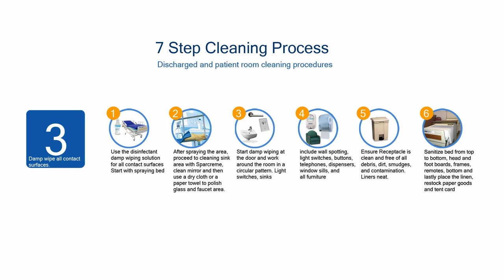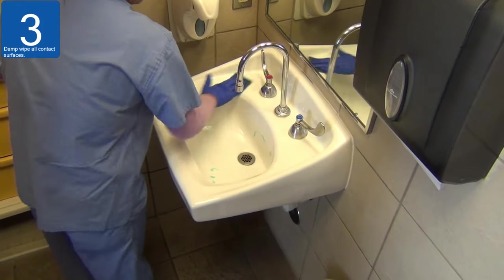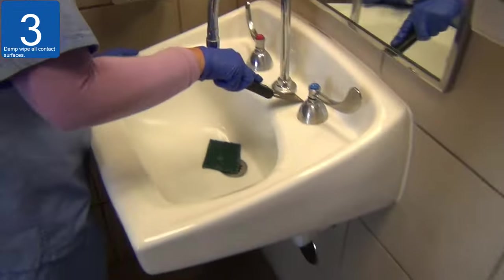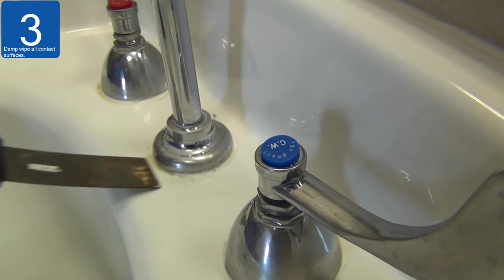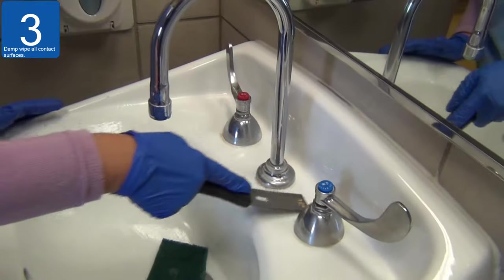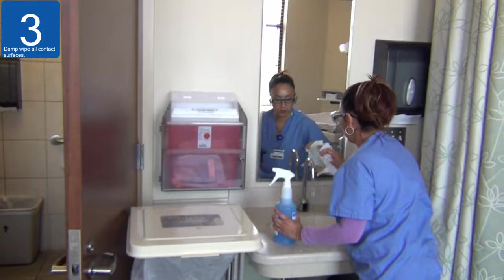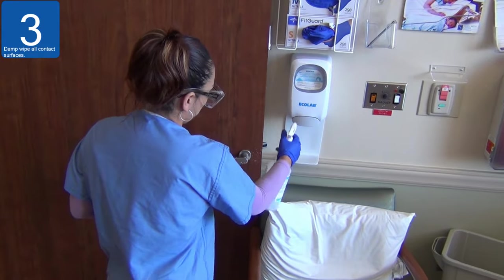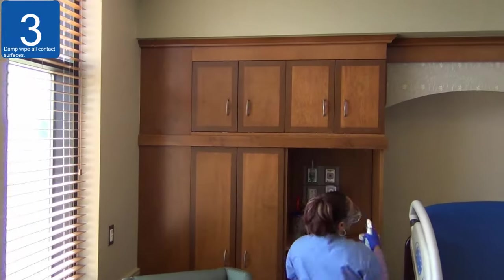Step 3: Damp wipe all contact surfaces. Start by cleaning the sinks first. Use a dry cloth or paper towel to polish both interior and low-level glass to a dry, streak-free appearance. Damp wipe all contact surfaces by following the EVS damp wiping procedure. Wipe everything you are able to reach. Use the disinfectant damp wiping solution for all contact surfaces. If cleaning an isolation room, check what kind of isolation and follow the proper cleaning procedures. For example, if cleaning a C. diff room, use C. diff cleanser to wipe all areas.